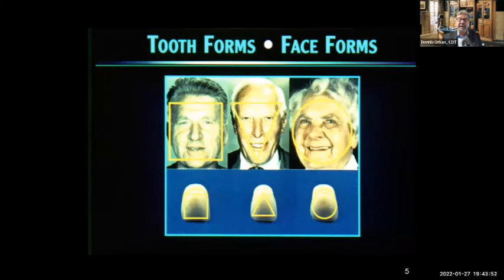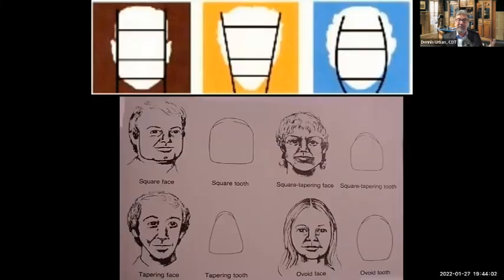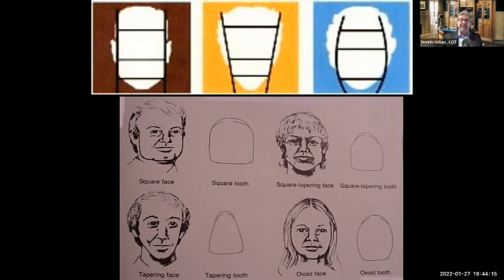Tooth form equals facial form — the shape of the face is generally what you get with your anterior centrals. I follow this rule over the years, especially with digital photography at the bench: square face, square tooth; tapering face, tapering tooth; and so forth. We have the picture of the patient, the information from the clinician on the occlusal rim, and the arch shape — together we can really pick out the correct tooth.